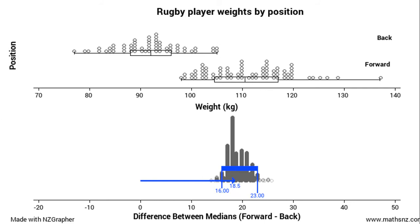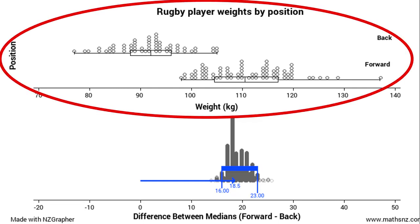This is my sample data from my rugby players and this is the bootstrapping graph that I've got out of NZ Graffer. There are a few things that we need to notice. Up the top we've got the box and whisker and dot plots — just the same graph squashed up a little bit, but that's exactly the same graph as before.